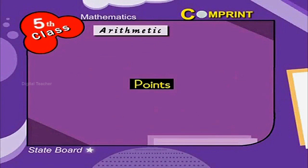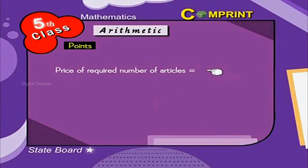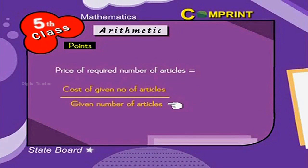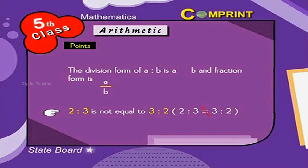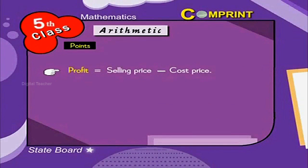Points to remember. Price of required number of articles is equal to cost of given number of articles by given number of articles into required number of articles. The division form of A is to B is A divided by B and fraction form is A by B. 2 is to 3 is not equal to 3 is to 2. Profit is equal to selling price minus cost price.